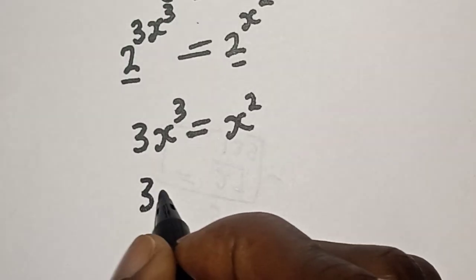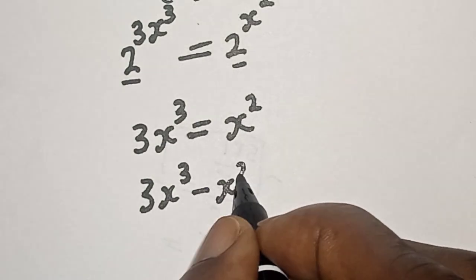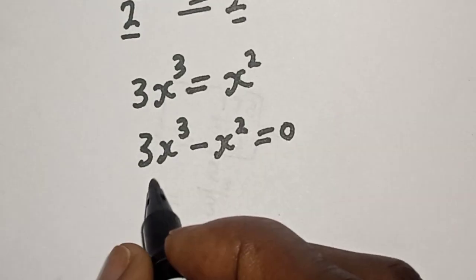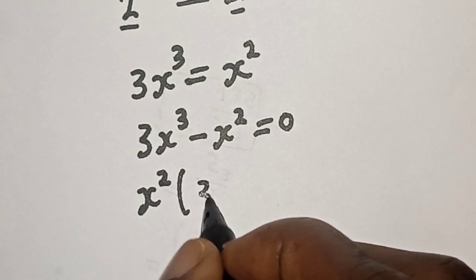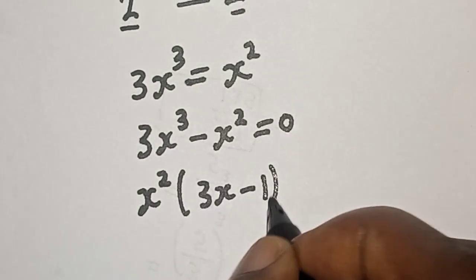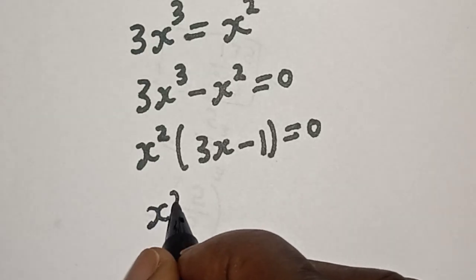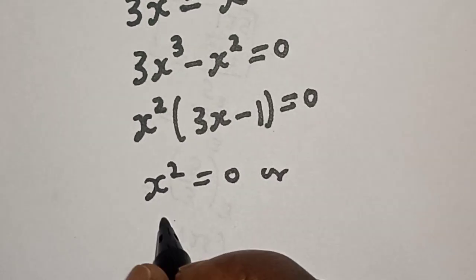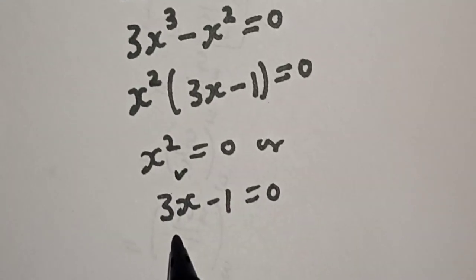Now let's bring this to this side: we have 3s raised to power 3 minus s squared is equal to 0. So let's factor s squared out — we have s squared times bracket 3s minus 1 is equal to 0. From here, s squared is equal to 0, or 3s minus 1 is equal to 0.